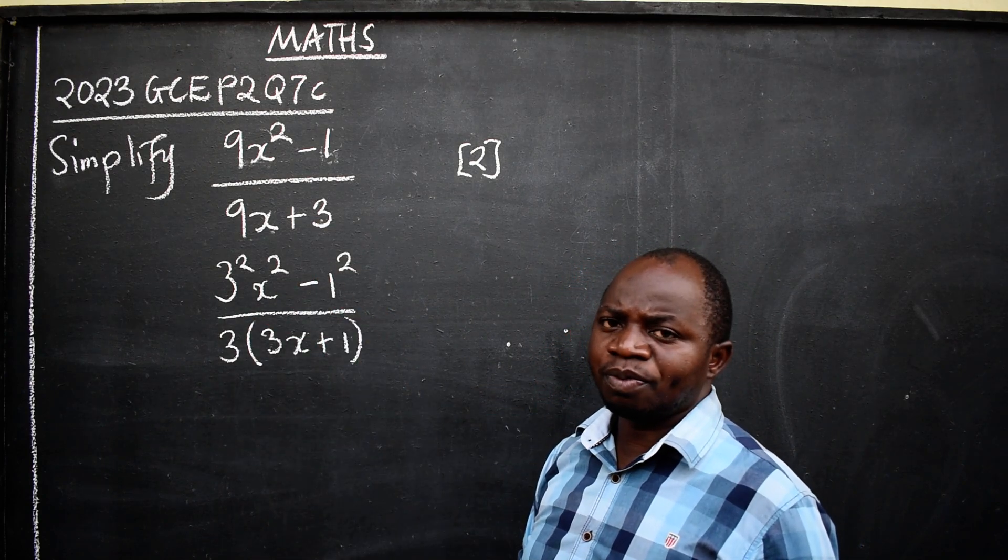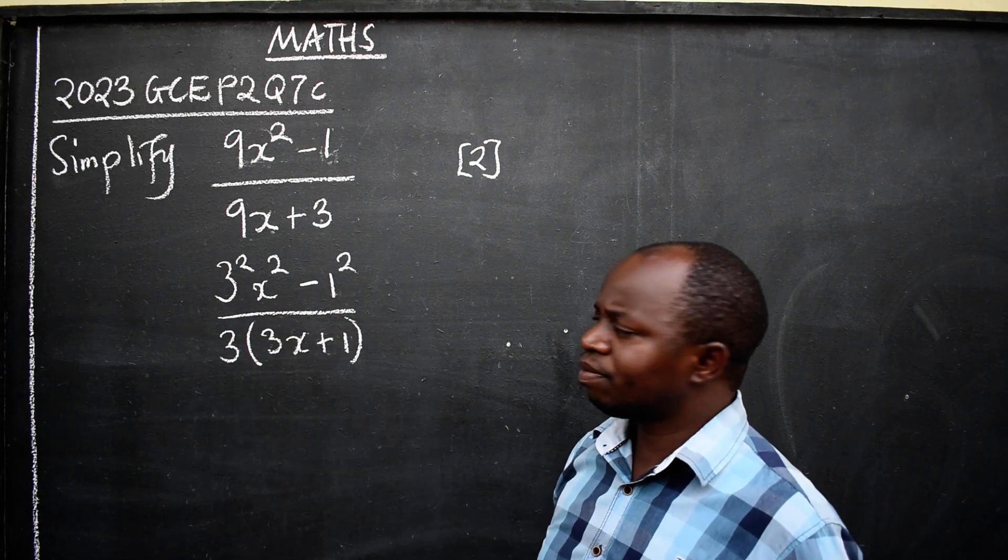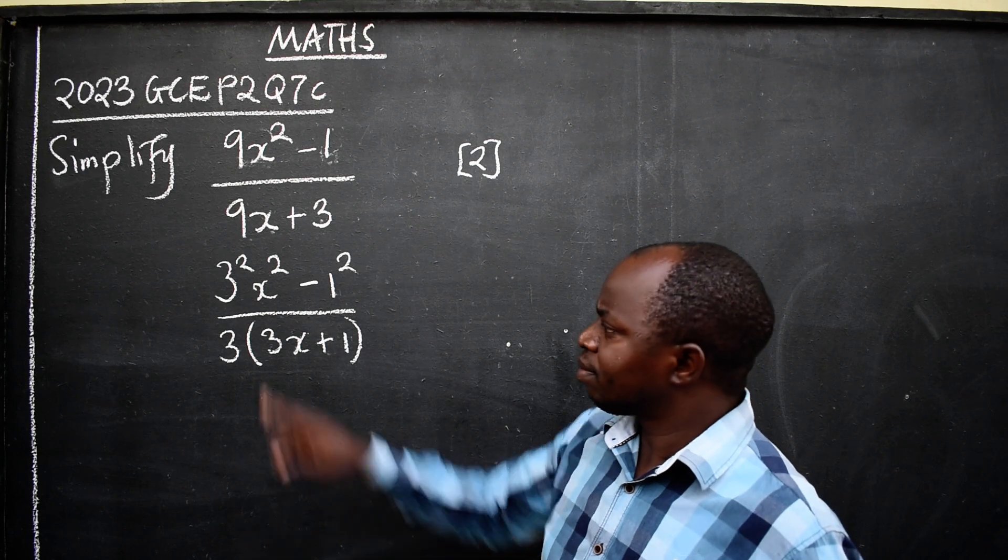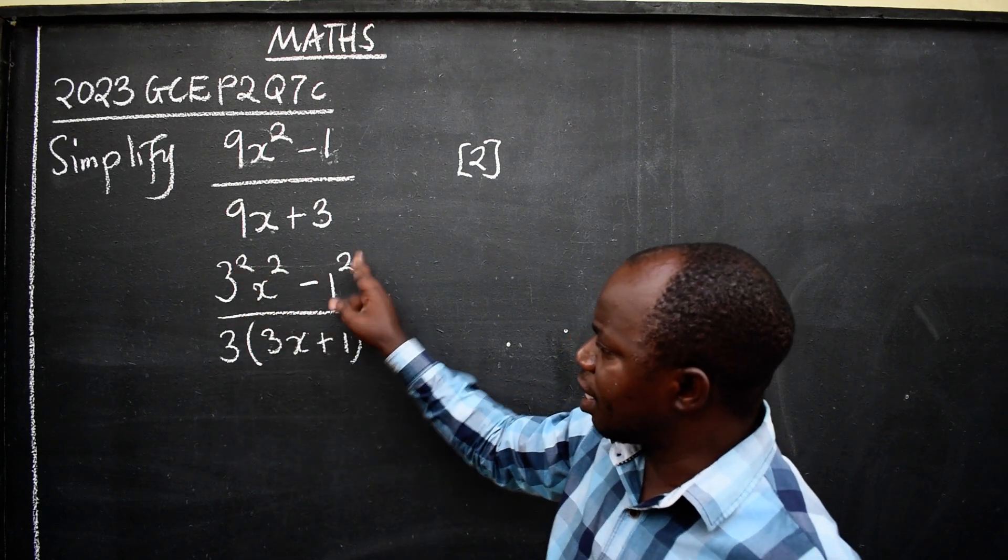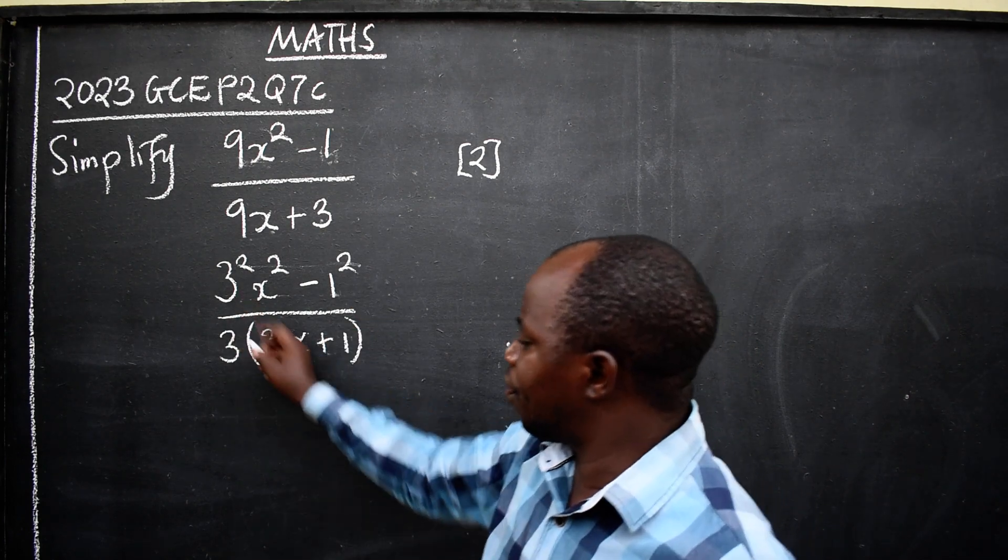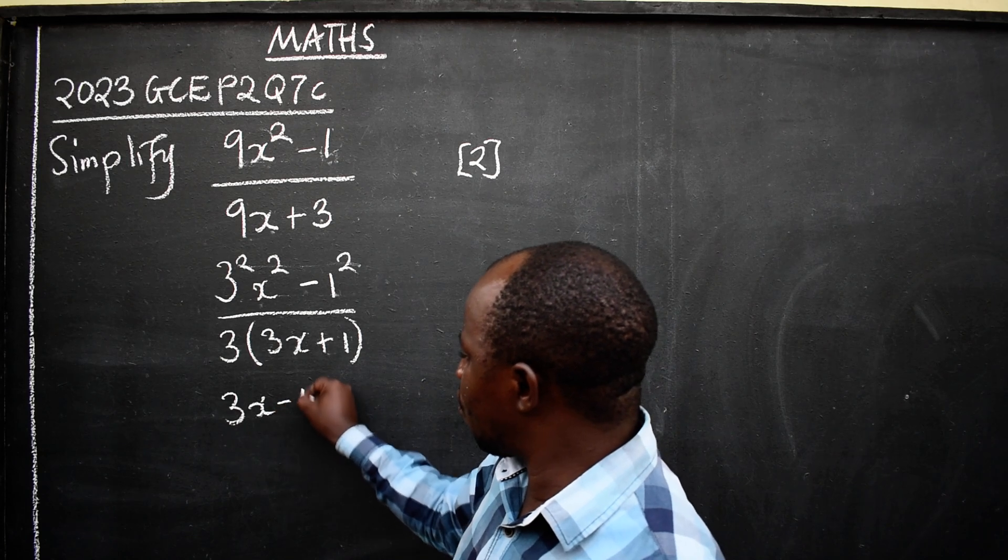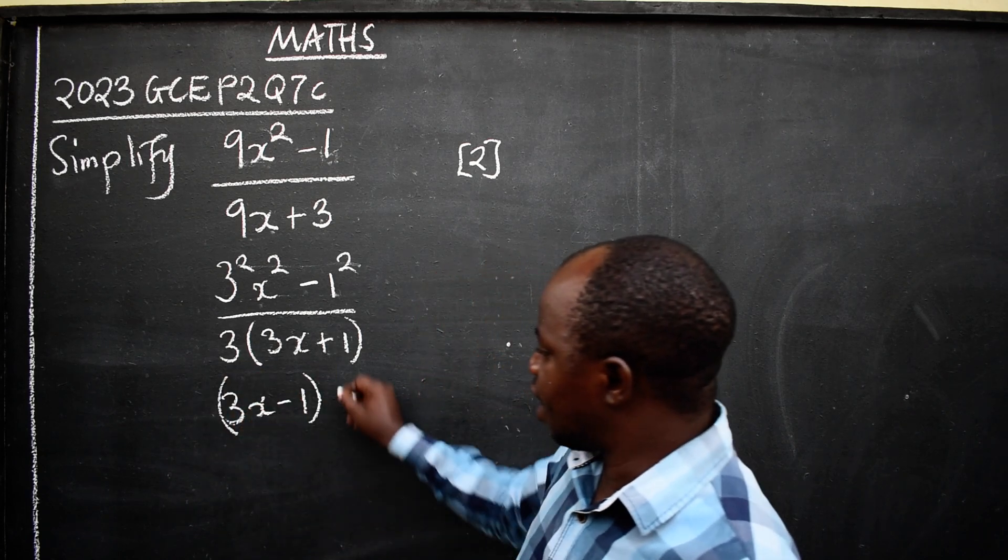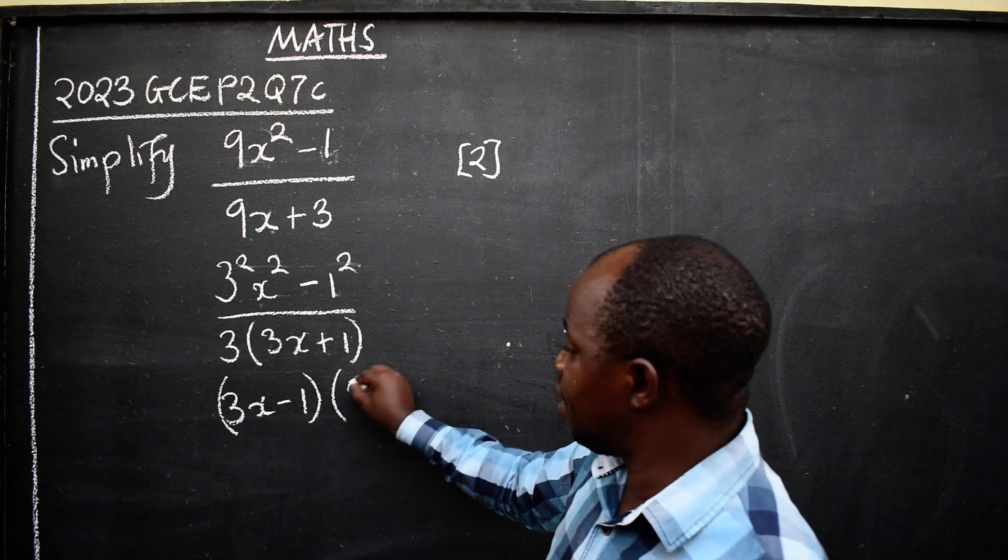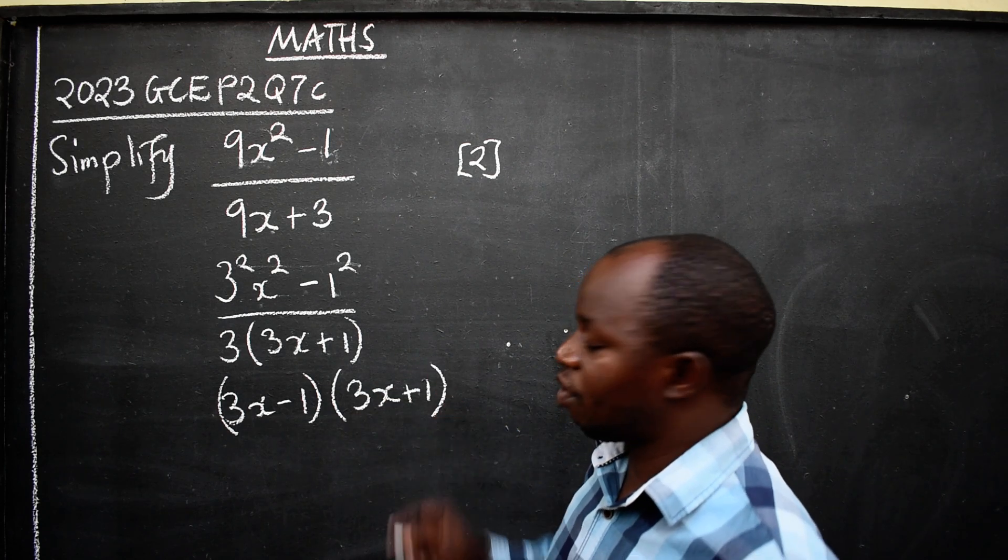Go back to the numerator. Now that everything is in square form, ignore the powers. Just write the base, which will be 3x minus 1. The other one will be what? 3x plus 1. You're factorized.